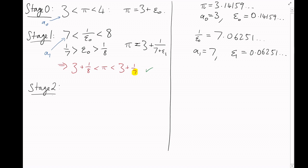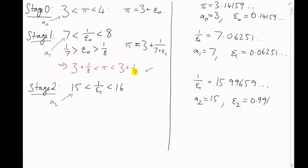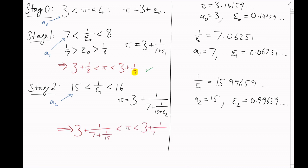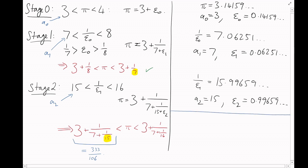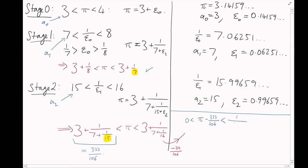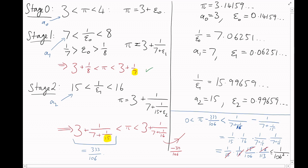Now let's repeat the process. We write ε₁ = 1/(a₂ + ε₂). Since 1/ε₁ = 15.9..., a₂ = 15, and this gives bounds on π. The approximation involving 15 simplifies to 333/106. Let's check it's precise enough: subtracting it from all sides, we get 0 < π − 333/106 < something where all the nested fractions cancel, leaving something obviously smaller than 1/106².